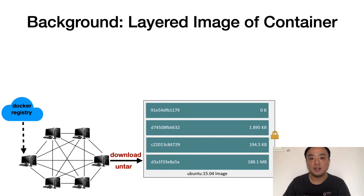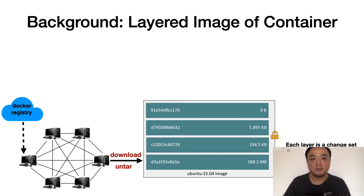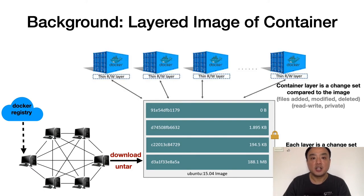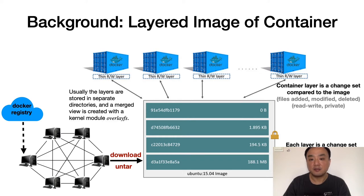Before introducing the details of DADI, let's take a look at the background. Container images are downloaded to the host and unpacked there. The images are constituted by multiple layers. Each layer is a change set compared to the previous state. The layers are read-only and shared by multiple container instances. Each container instance has a private container layer that is writable. It is a change set compared to the image. Usually the layers are stored in separate directories, and the merged view is created with the kernel module overlayfs.